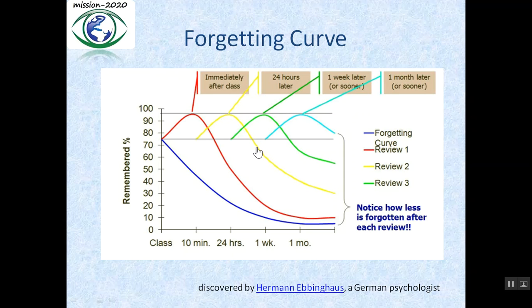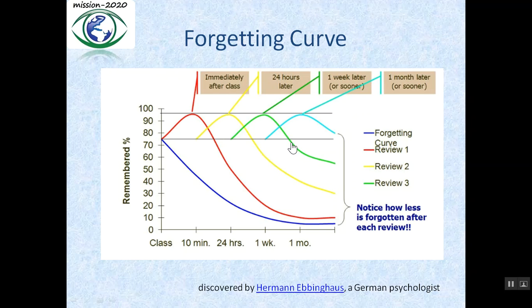Now let us see what happens after 1 week. Look at the yellow curve — you see that after 1 week you can remember 60%. But if you revise within 1 week, just look at this green curve — you can remember up to 95% again. You can see that the forgetting speed of the green curve is slower than the blue, red, and yellow curve.